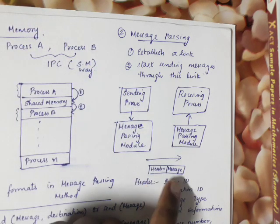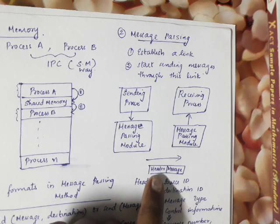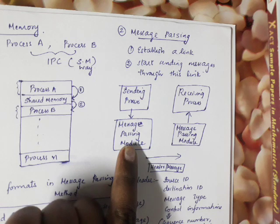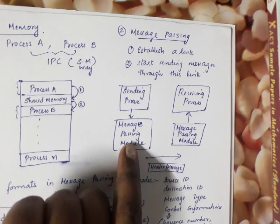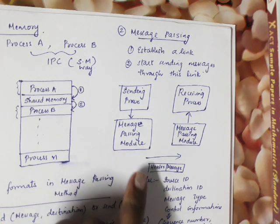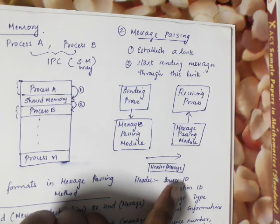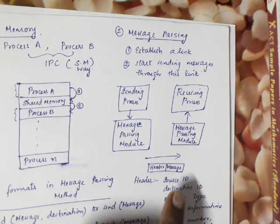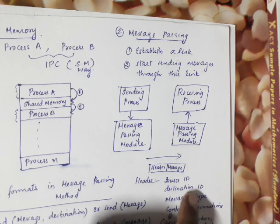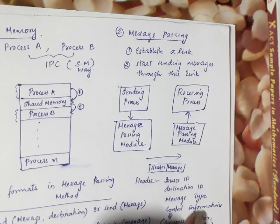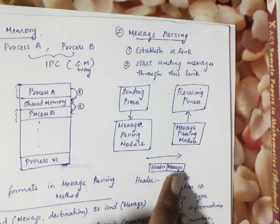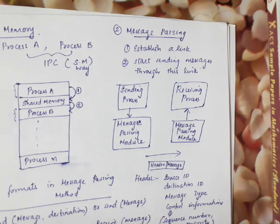A message has a specific format consisting of a header and a message body. The header contains the sender ID, the receiver ID, the type of message, and security information. The header also includes the destination address, control information, and a sequence number. We also add a priority to the message.